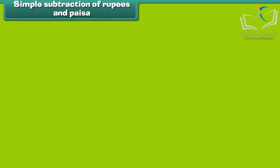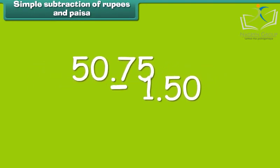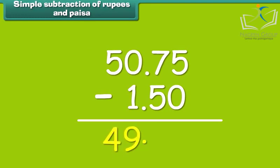Subtraction of rupees and paisa is simple. Subtract 1 rupee 50 paisa from 50 rupees 75 paisa. We first subtract numbers in the paisa column and then in the rupee column. So the answer is 49 rupees and 25 paisa.